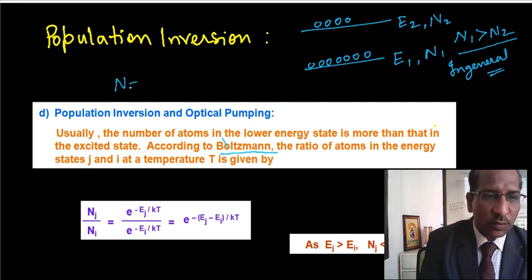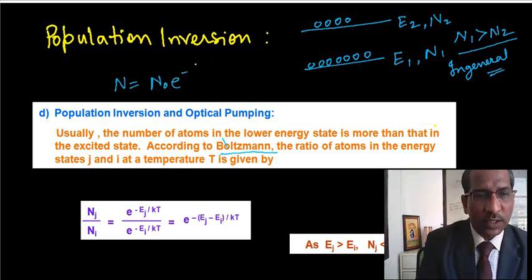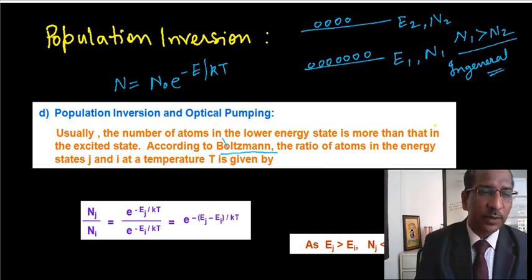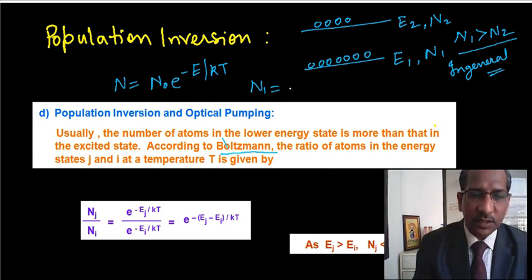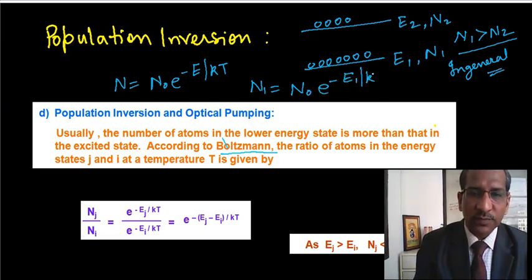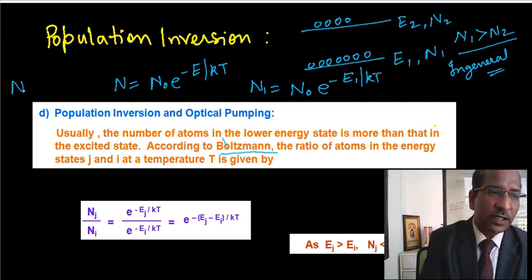This is N equals N0 e raised to the power minus E upon Boltzmann constant into the temperature at which you are trying to find out the number of atoms corresponding to this energy state. So if we have N1 number of atoms corresponding to the ground energy state, this can be written as N1 equals N0 e raised to power minus E1 upon kT. And remember this N0 is the total number of atoms.